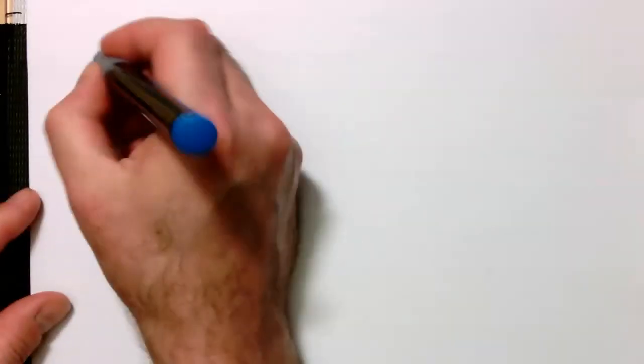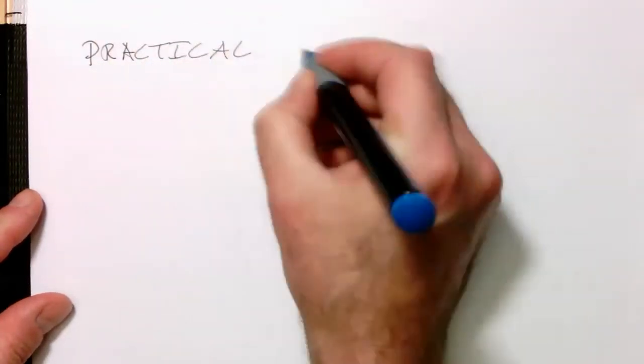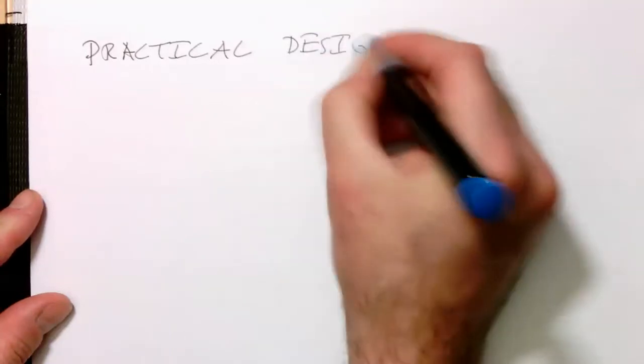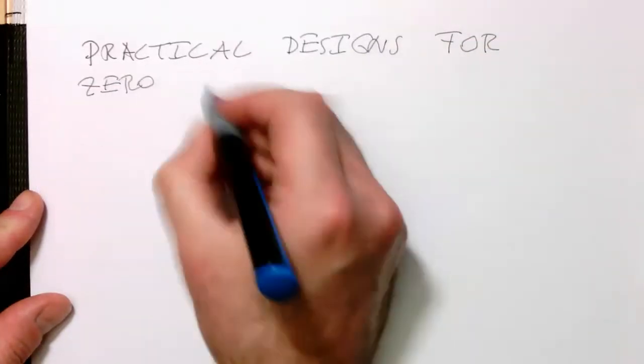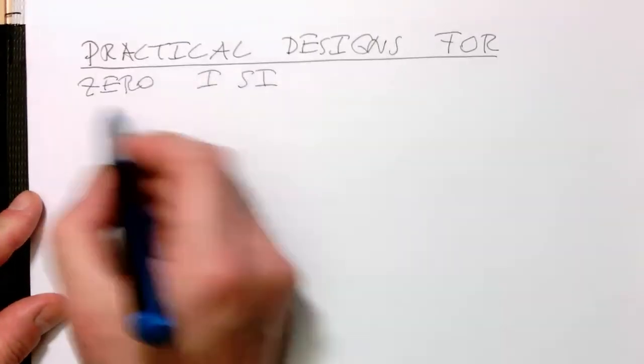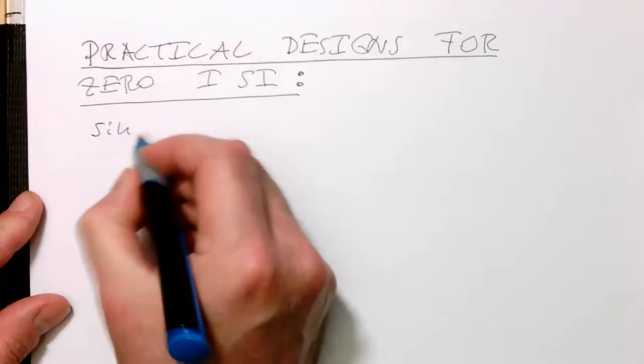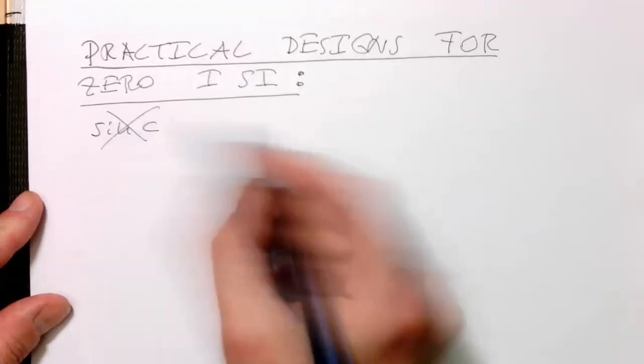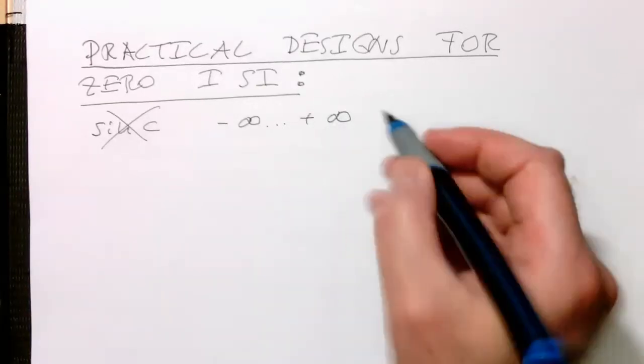So let's look now at practical designs for zero inter symbol interference, for zero ISI. So obviously we cannot take the sinc function because this runs from minus infinity to plus infinity. So therefore that's not practical.